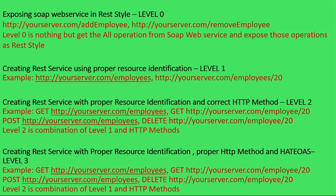That is called Richardson Maturity Model Level 1. Then the third one is Level 2. In Level 2, we are creating a service with proper resource identification along with the correct HTTP method. In the case of Level 1, we are thinking only about the resource, but we are not thinking about what kind of HTTP method to use. In Level 2, we think about the action plus the right HTTP method on the resource.